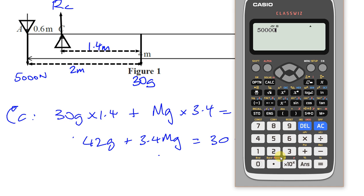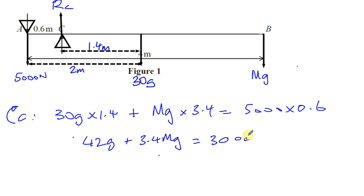Plus 3.4 Mg is equal to 3,000. Let's make sure. 5,000 times 0.6. 3,000, sorry. 3,000. Okay.